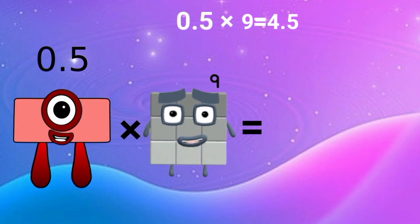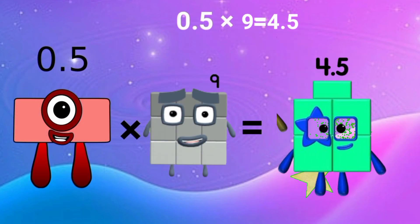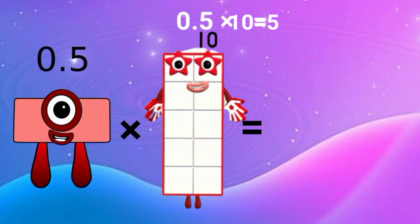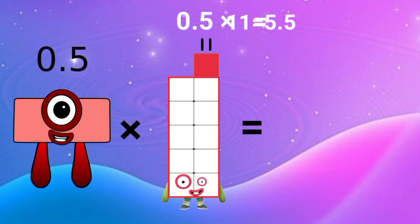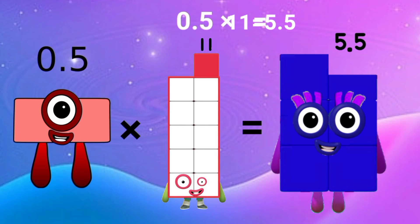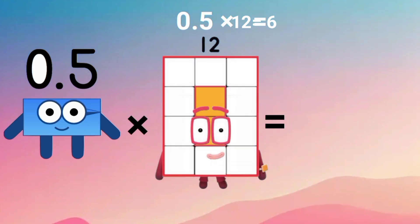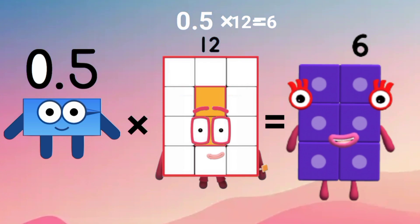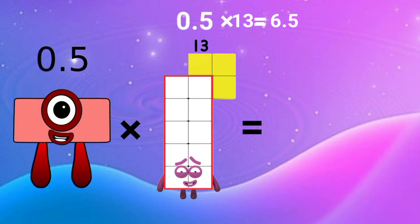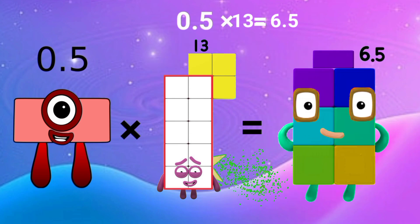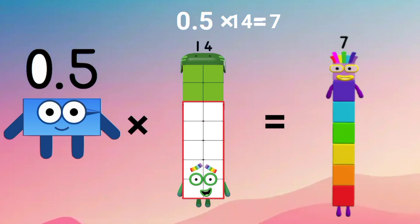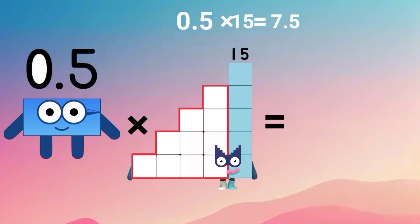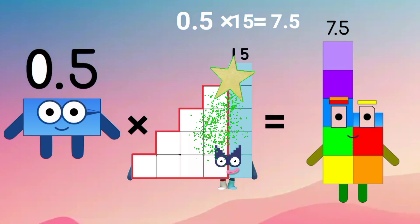0.5 x 9 equals 4.5. 0.5 x 10 equals 5. 0.5 x 11 equals 5.5. 0.5 x 12 equals 6. 0.5 x 13 equals 6.5. 0.5 x 14 equals 7. 0.5 x 15 equals 7.5. Now count down by decimal number.